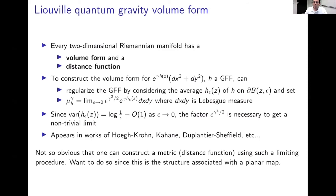It turns out it's not so difficult to build a random measure, but it's more challenging to construct the associated metric — the distance function rather than the Riemannian metric. The difference is that area is a local feature, whereas the metric is a global feature: to calculate the distance between two points you have to perform an optimization problem depending on a lot of information. Building this metric is of interest because if you want to make a connection to random planar maps, the natural structure a planar map has is its distance function.